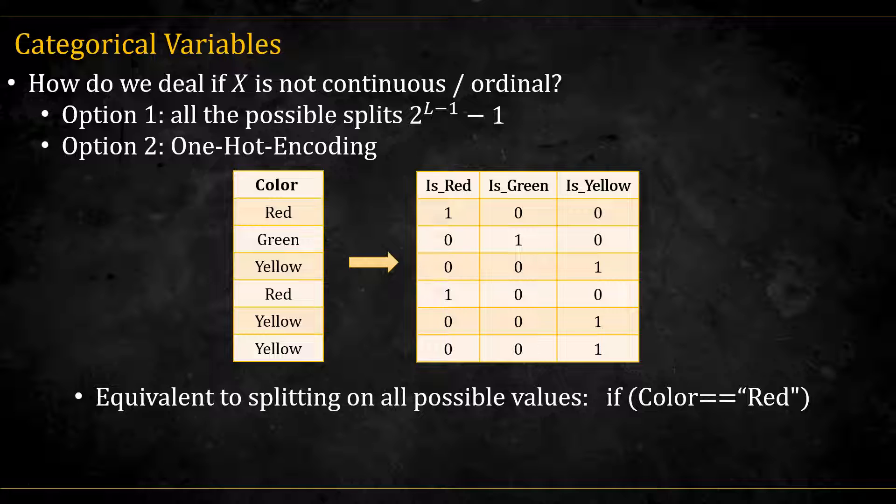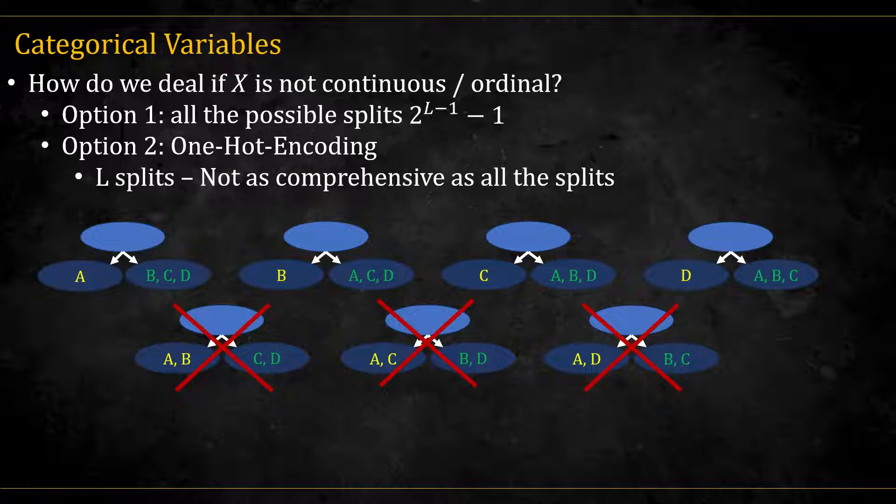Another option, which is much simpler, is to do one-hot encoding. In the example given here, we turned a color variable that has three values to a one-hot vector. Doing this is equivalent to considering a split by each class by its own. So we will only have l splits in this case. This is not as expressive as we don't consider all the possible splits.